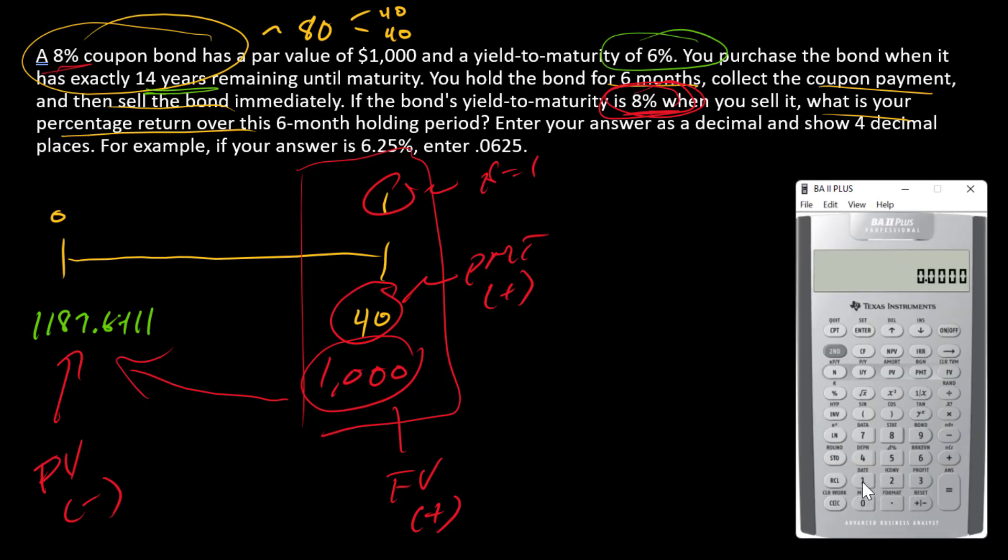Jumping over to the financial calculator, I'll put $1,000 in FV, $40 in PMT, 1 is N because there's only one period, 1,187.641 as a negative number as PV because that's what's being paid, and compute I. OK, so I is negative 12.43%.